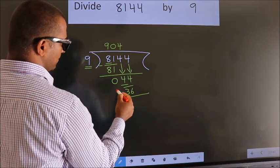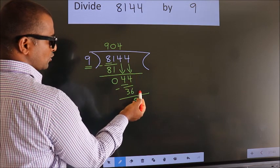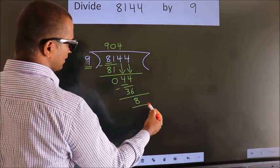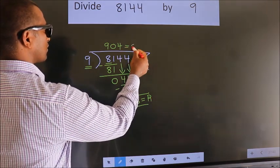Now, we subtract. We get 8. No more numbers to bring down. So, we stop here. This is our remainder. This is our quotient.